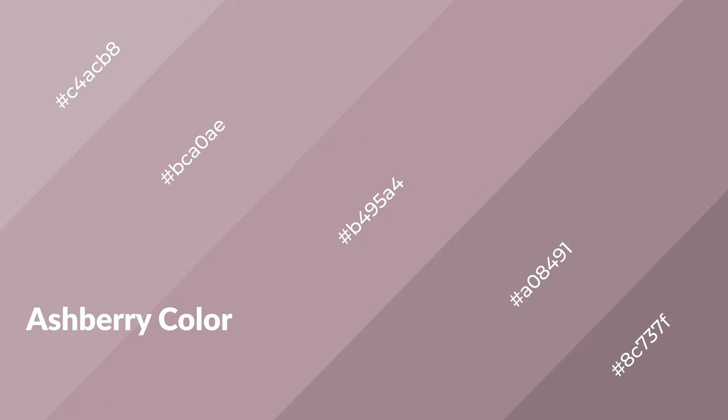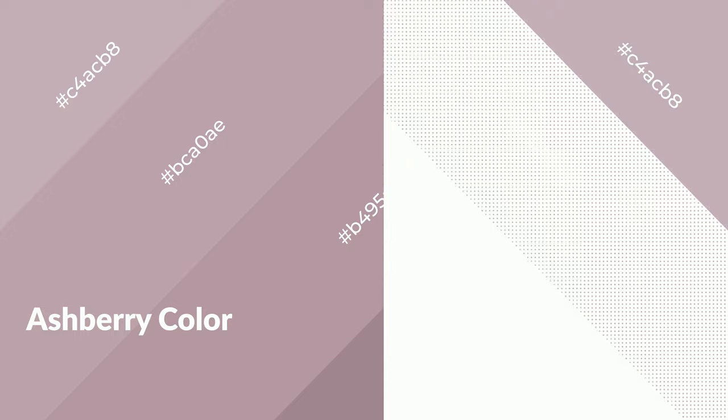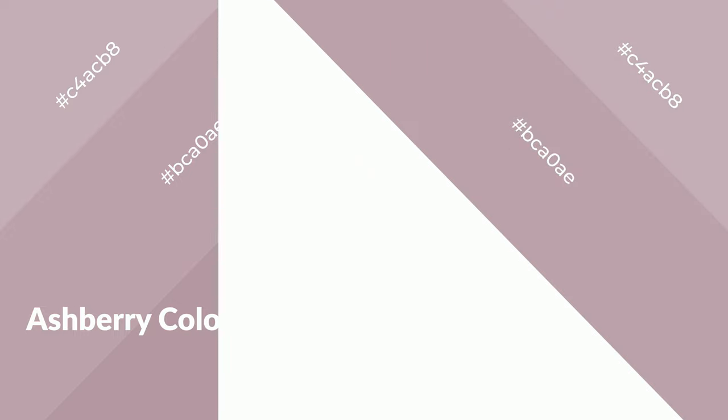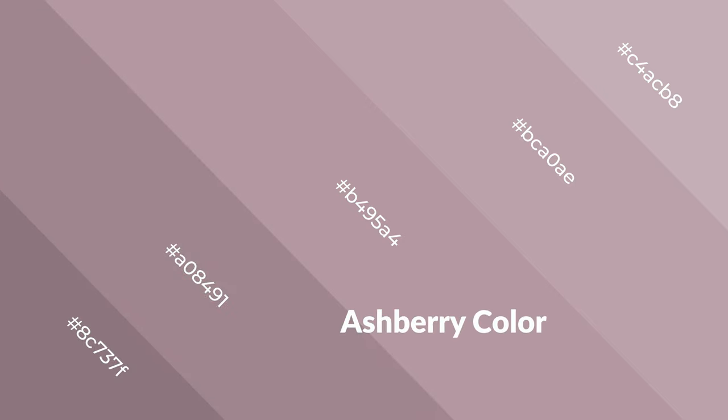Ashberry is a warm color and it emits cozier and active emotions. Warm colors are symbols of warmth, fire, heat, and sunshine. It also evokes joy, passion, love, and even anger. You can see them used in restaurants and gyms.